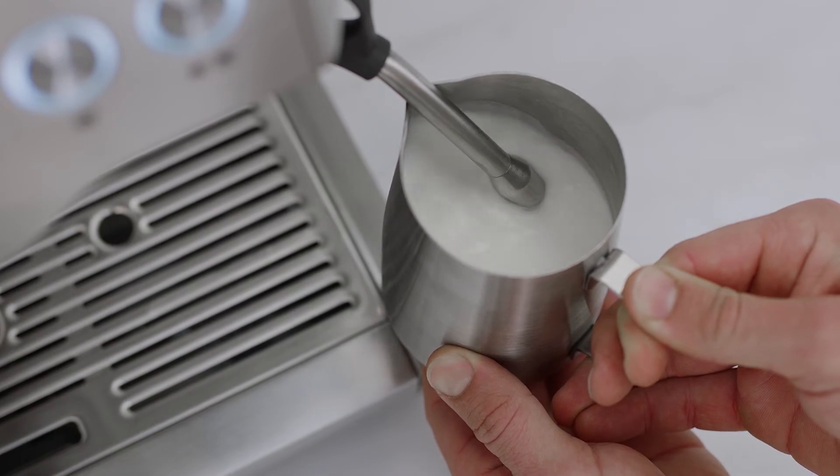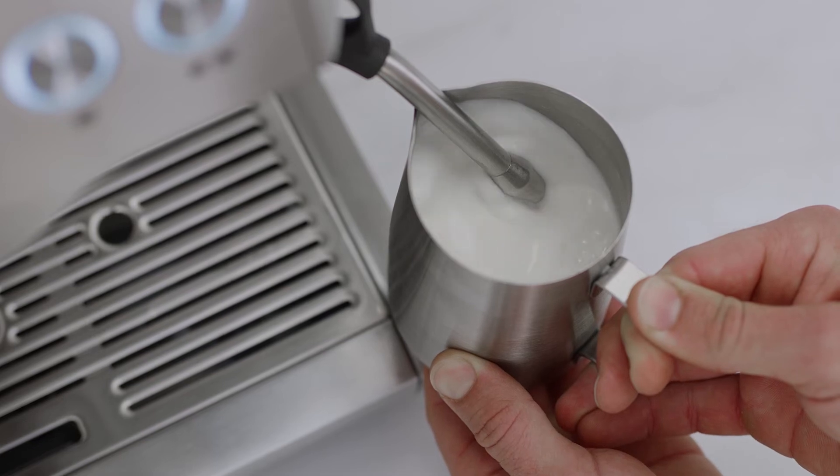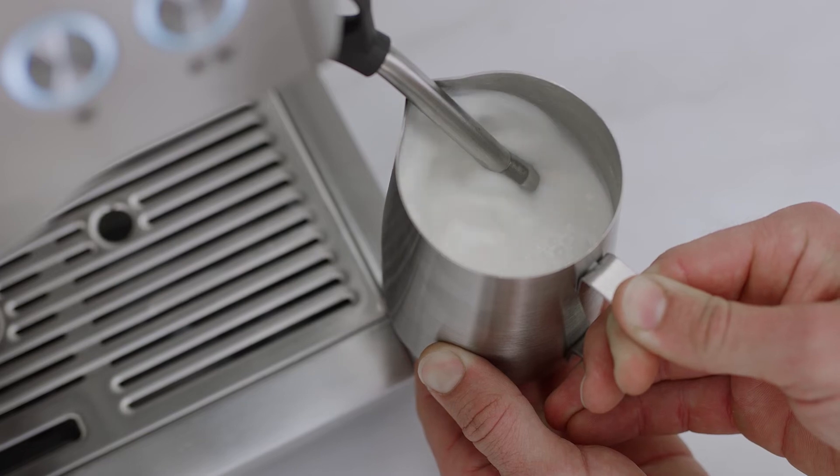Continue to just break the surface while maintaining this whirlpool effect. When sufficient texture has been created, raise the jug slightly to submerge the tip, but still maintain the whirlpool.